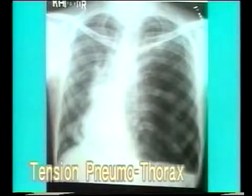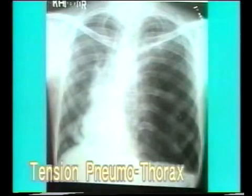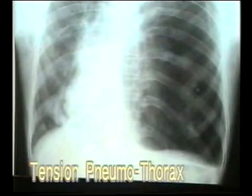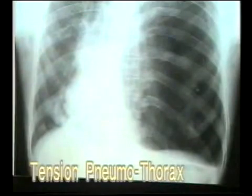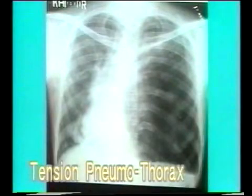This is another case of a complete pneumothorax. The left hemithorax is radiolucent and the mediastinum is markedly pushed to the opposite side compressing the right lung. The large amount of shift of mediastinum is indicative of the high pressure in the pneumothorax and this is termed as a tension pneumothorax. A tension pneumothorax is a medical emergency requiring urgent drainage as it is compressing the opposite lung and hampering with its expansion.